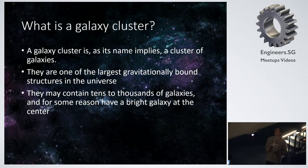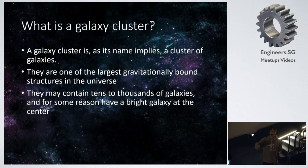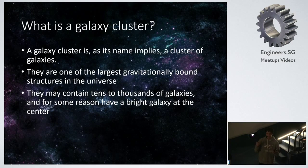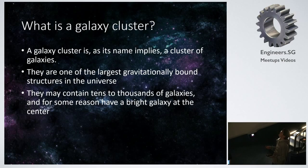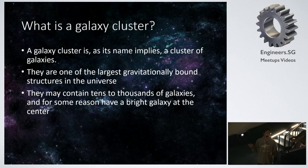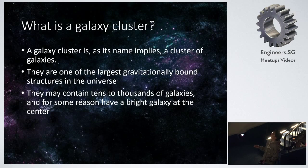The next question is what a galaxy cluster is. A galaxy cluster is a cluster of galaxies. We are on earth; the earth is part of the solar system; the solar system is part of the Milky Way, which is a galaxy; and the Milky Way itself is part of a galaxy cluster. There can be thousands of galaxies in a cluster. They are one of the largest gravitationally bound structures in the universe, although recently we've been speaking about superclusters which are even bigger — tens to thousands of galaxies. Empirically, we find there is always a bright galaxy at the center, and the model of galaxy cluster formation must account for this.